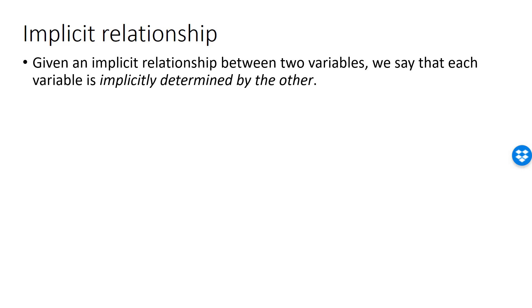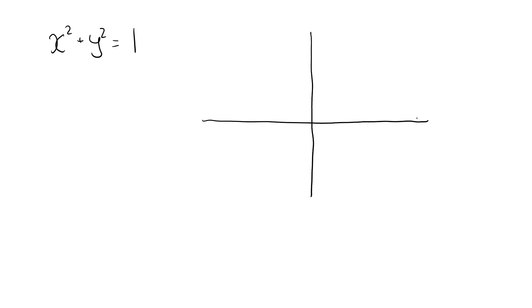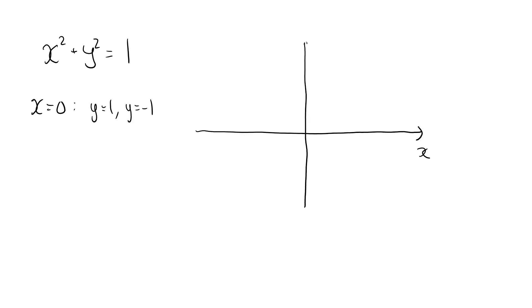There is an equation connecting the variables. We use the word implicit because we need to solve an equation to figure out the value of the other variable, compared to an explicit relationship where we can simply calculate y from x. Since each variable is implicitly determined by the other, we can create a graph of an implicit relationship. For example, for x squared plus y squared equal to 1, if we pick x equal to 0, we get y equal to 1 or y equal to minus 1. The point (0, 1) satisfies the relationship and is one point on our graph; similarly, (0, −1) is another point. We can continue trying different values for x.